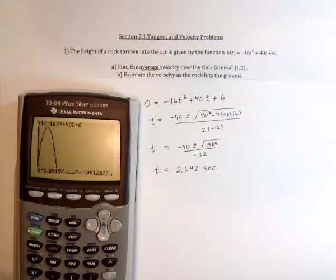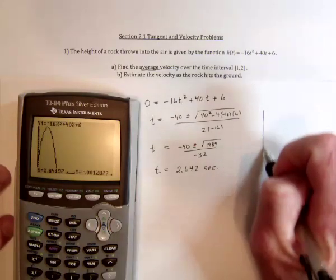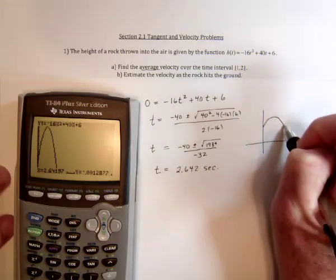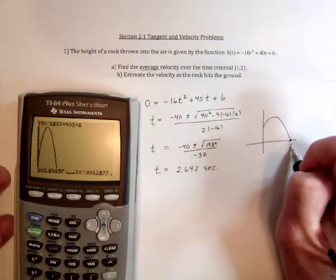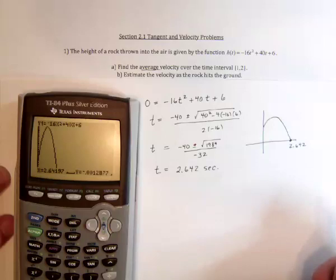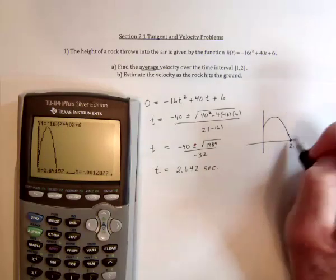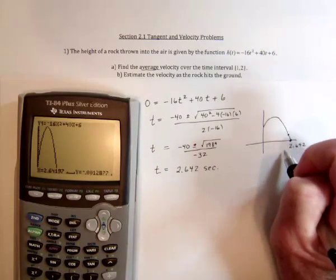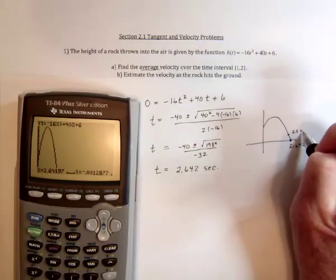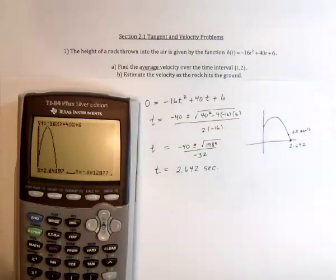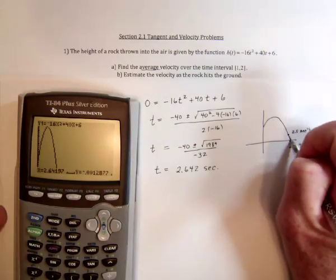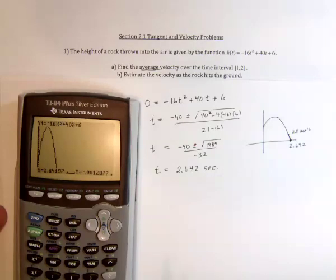So the next thing to do is, instead of using the interval from 1 to 2, like the first part, we've got, so far, only one number to use, 2.642. But the question is asking, estimate the velocity just as the rock hits the ground. So in the moment before it hits the ground, we could say, go back, let's say 0.1 of a second, to when it was 2.5 seconds. And then, do the work like we did on part A, using this time interval, from 2.5 seconds to 2.642.